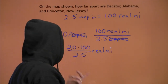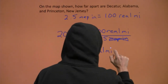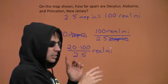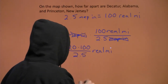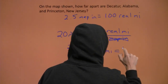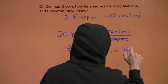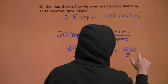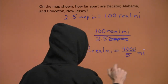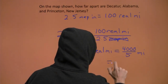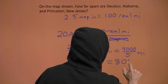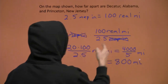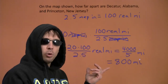We get 20 times 100 over 2.5 real miles. 20 times 100 is 2,000, so we've got 2,000 over 2.5. I'm going to multiply the top and bottom by 2 to get rid of that decimal — that gives me 4,000 over 5 miles. 4,000 divided by 5 is 800 miles. Conversion factors for the win.